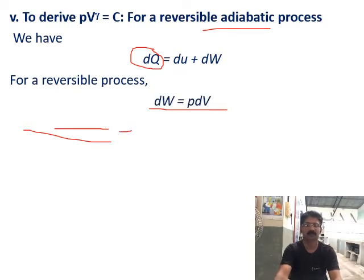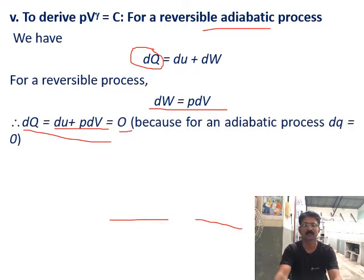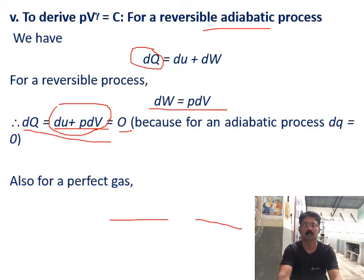For a perfect gas, PV equals RT, or P equals RT by V. Substituting in the expression DU plus PDV equals zero, in place of P we substitute RT by V, so it becomes RT times DV by V equals zero, giving DU plus RT times DV by V equals zero.